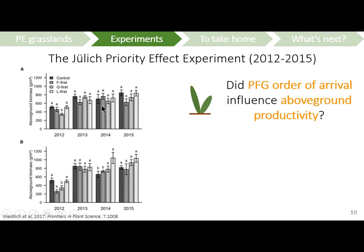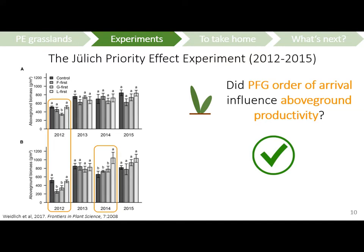When you look at this graph showing the effect of plant functional group order of arrival over time on total above-ground productivity, you can see that order of arrival clearly affected above-ground productivity. In the first year, synchronous and legume-first plots were the most productive, with grasses-first plots being the least productive. In 2013, this priority effect disappeared. But in 2014, it reappeared in area B only, with legume-first plots being much more productive than the others — which is expected because sowing legumes first promotes nitrogen facilitation.